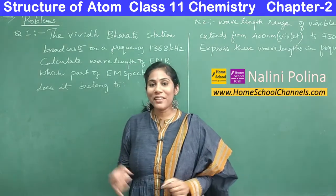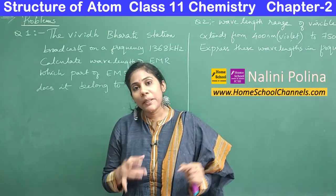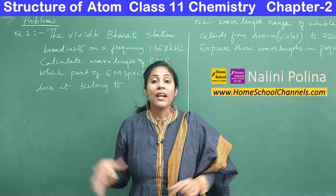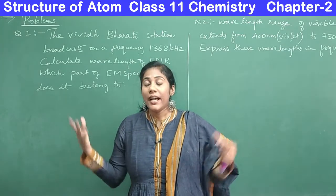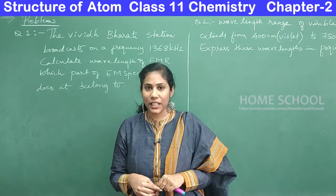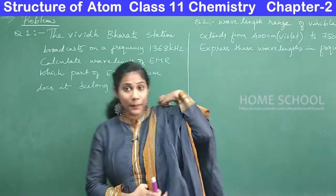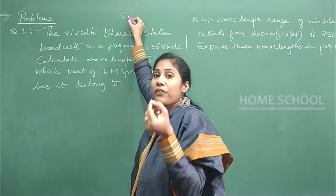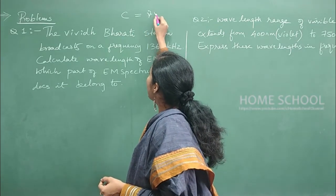Welcome to Homeschool. We are in the Class 11 Chemistry series, chapter: Structure of Atom. In my previous video I discussed everything about the nature of electromagnetic radiation — how EM radiations are produced, how they travel, their properties, and terms like frequency, velocity, wavelength, and wave number. I gave you one important formula relating c with frequency and lambda: c = νλ.